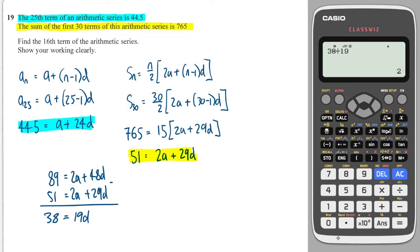So d is equal to 2. Substituting back: a plus 24 times 2 is 48. So a is equal to 44.5 minus 48, which is minus 3.5.